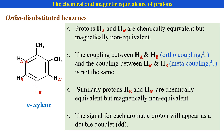In this case, the signal for the HA proton is a double doublet. This is because HA proton couples with HB. According to the n+1 rule, the signal splits into two lines — we get a doublet.